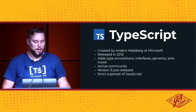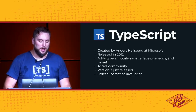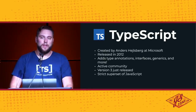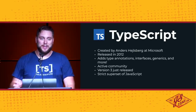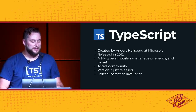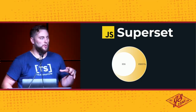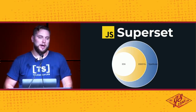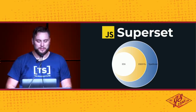TypeScript was created at Microsoft by Anders Hejlsberg, who created C#, Turbo Pascal, and Delphi. It was released publicly in 2012. It adds type annotations, interfaces, generics, and more — a layer on top of JavaScript that gives us statically typed advantages in our dynamic language. It's a very active community; version 3 was just released. And it's a strict superset of JavaScript — not a language like CoffeeScript or Dart trying to change JavaScript into something else. It fully embraces JavaScript and extends it with types on top.